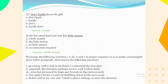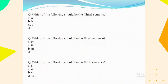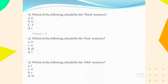Rearrange the following sentences — first, second, third, fourth, and fifth — in a proper sequence to make a meaningful paragraph, then answer the following questions. Which of the following should be the first sentence? The answer is the fourth one. Which of the following should be the fifth sentence? The answer is the third one.